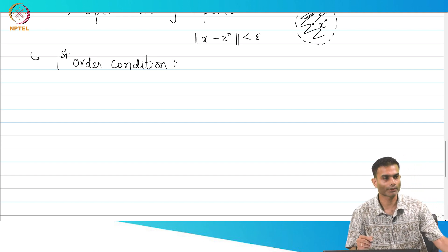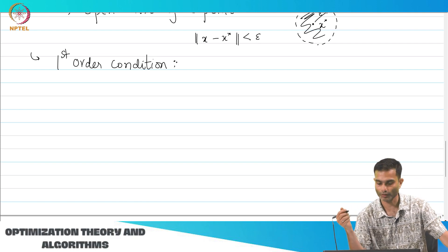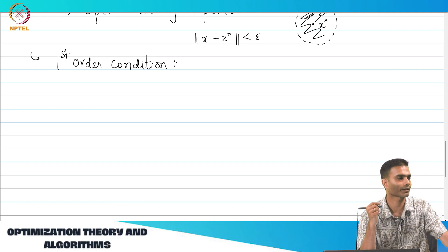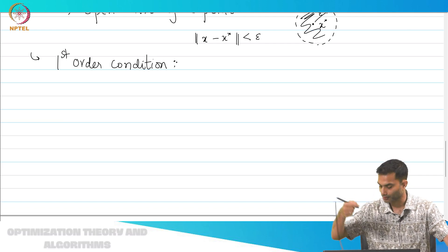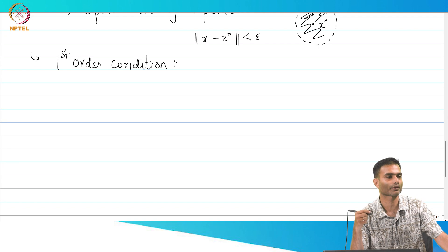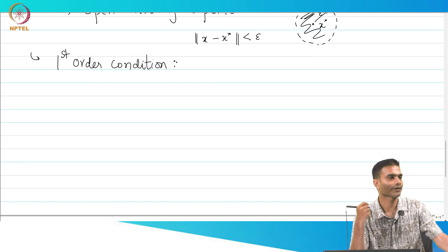Let us write it down and then we will interpret it. It is very straightforward, it is the generalization of what you had expected from calculus of single variable. What was in calculus of a single variable, what was your identifier of a minima? f' equal to 0.